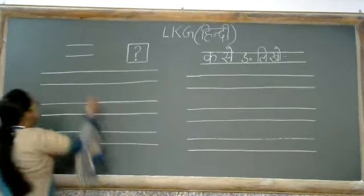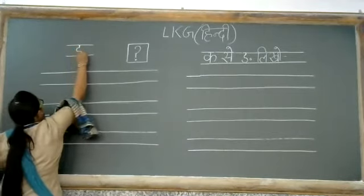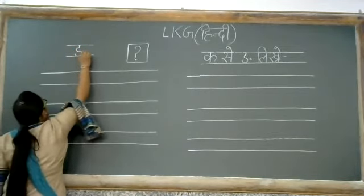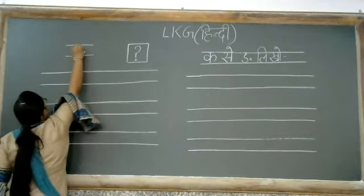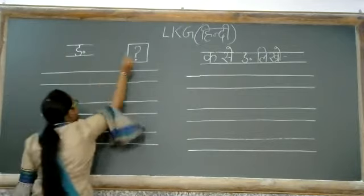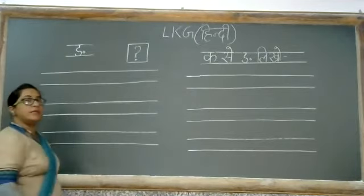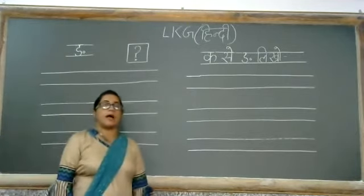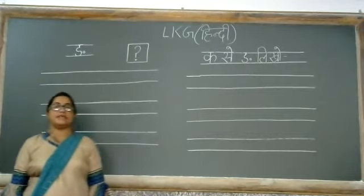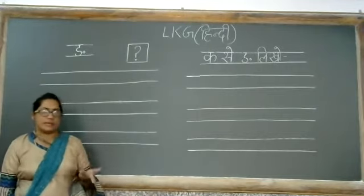So R — how do you write R? When you wrote E, like in Emily, it was the same. R, R.